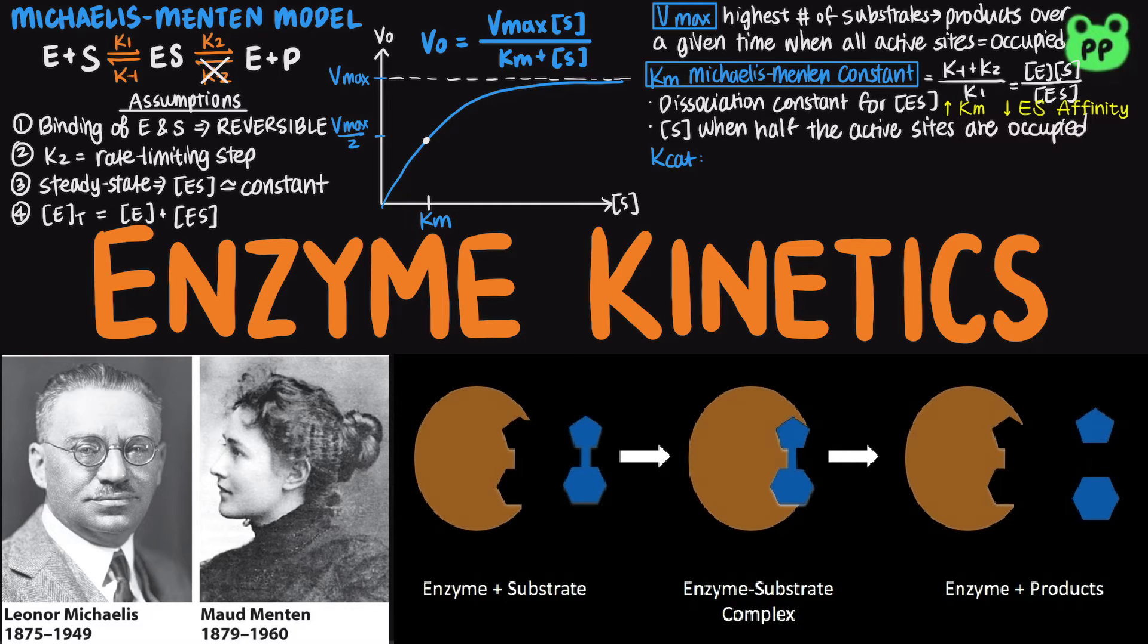The catalytic constant, or Kcat, equals Vmax over the total enzyme concentration. It is also known as the turnover number and the molecular activity, which indicates the maximum number of substrates that are transformed into products by a single active site in a period.